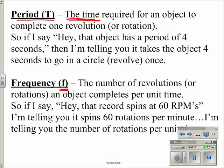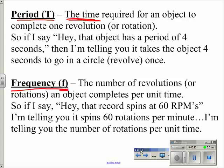Frequency — lowercase f is the symbol for frequency. It has to be lowercase because capital F is force. Frequency represents the number of revolutions or rotations that an object completes per unit time. A common example is a record player set at 33 and a third RPMs or 45 RPMs. So if a record spins at 60 RPMs, it completes 60 rotations per minute. Period tells you how long it takes to go around once; frequency tells you how often it goes around — how many times per unit time.